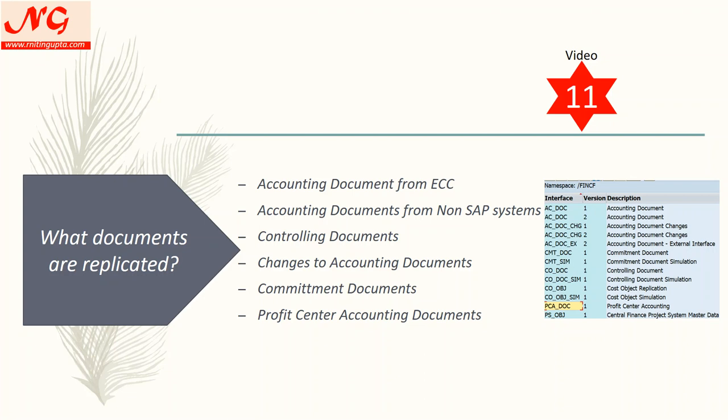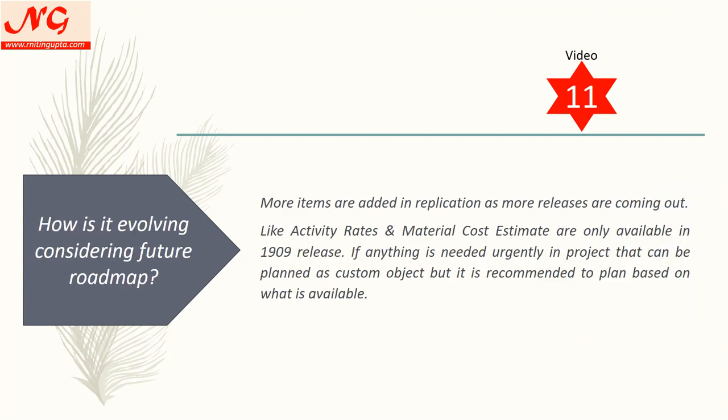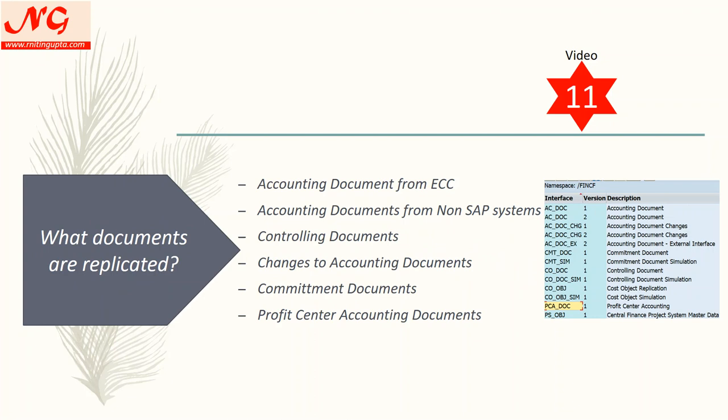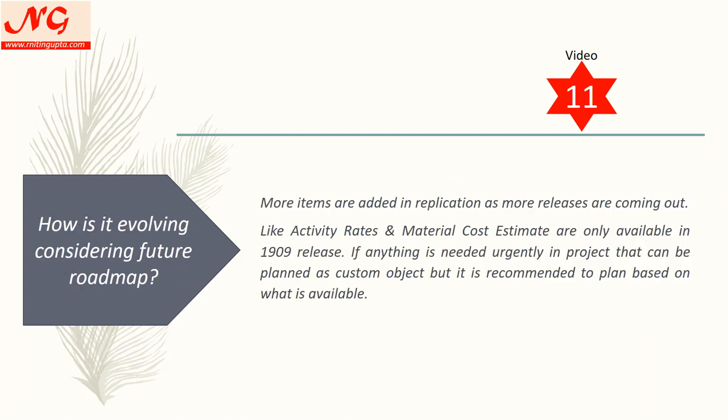A common question about the future roadmap: SAP adds more items with each new release. For example, activity rates and material cost estimates were just added in the 1909 release. The screen I'm showing is from an 1809 system, so those newer objects don't appear there yet. If you need something urgently, you can consider a custom approach, but it is recommended to wait as SAP continues adding more objects with each release.